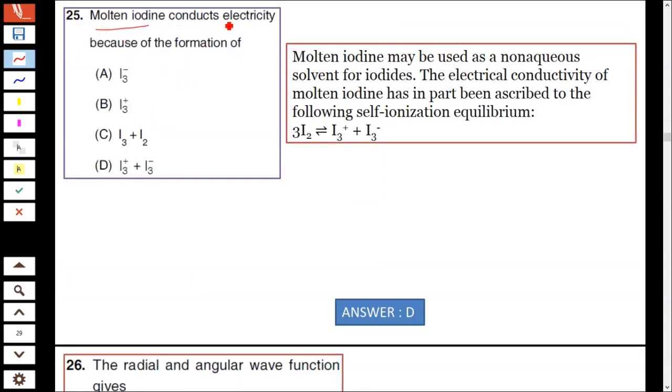Question 25: Molten iodine conducts electricity because of the formation of I₃⁻ and I₃⁺. Molten iodine may be used as a non-aqueous solvent for iodides. The electrical conductivity of molten iodine has in part been ascribed to the following self-ionization equilibrium. A self-ionization equilibrium occurs between iodine, molten iodine, which contains I₃⁺ and I₃⁻. Hence option D is correct.